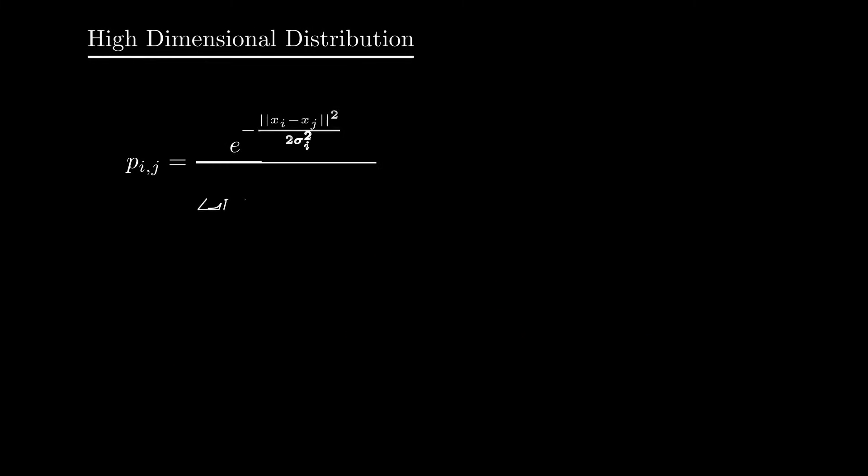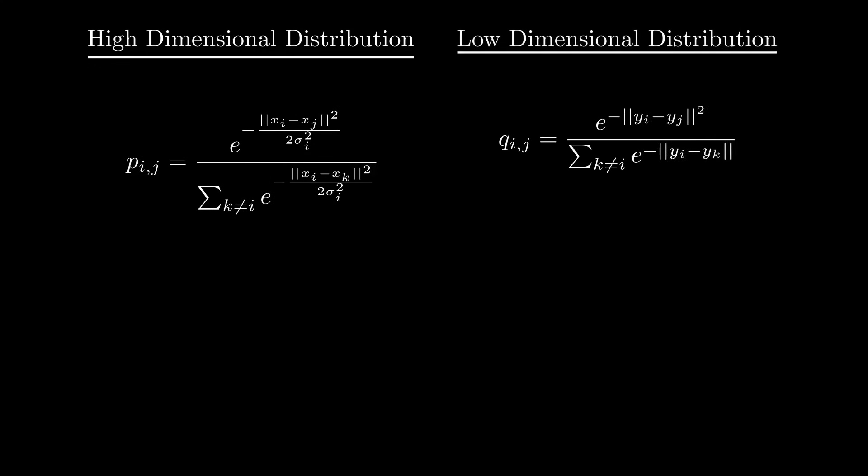We can explicitly compute the KL divergence between the distribution representing our high-dimensional space and the distribution representing our low-dimensional space. Then we can calculate the gradient of this KL divergence with respect to our low-dimensional embeddings, which gives us this nice formula. This allows us to adjust the low-dimensional representation to be closer to our original distribution.